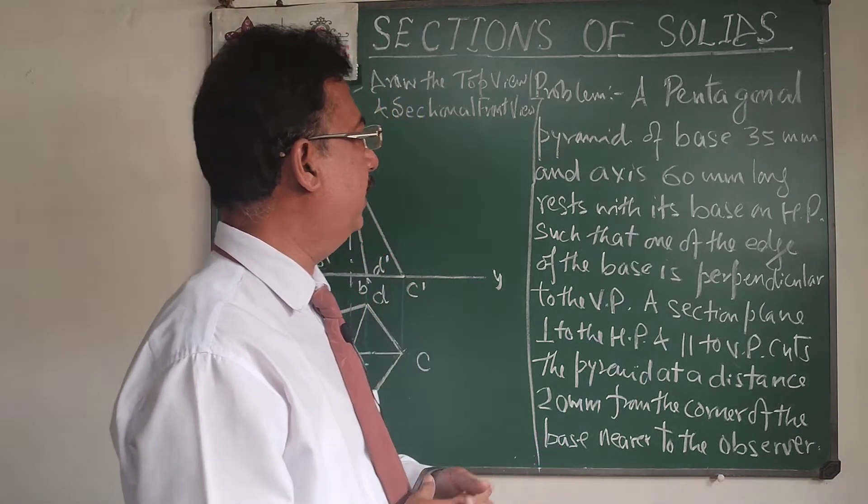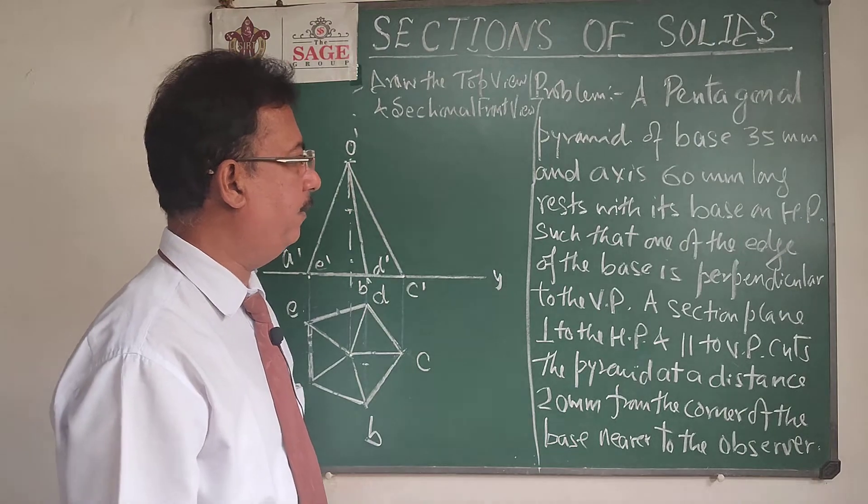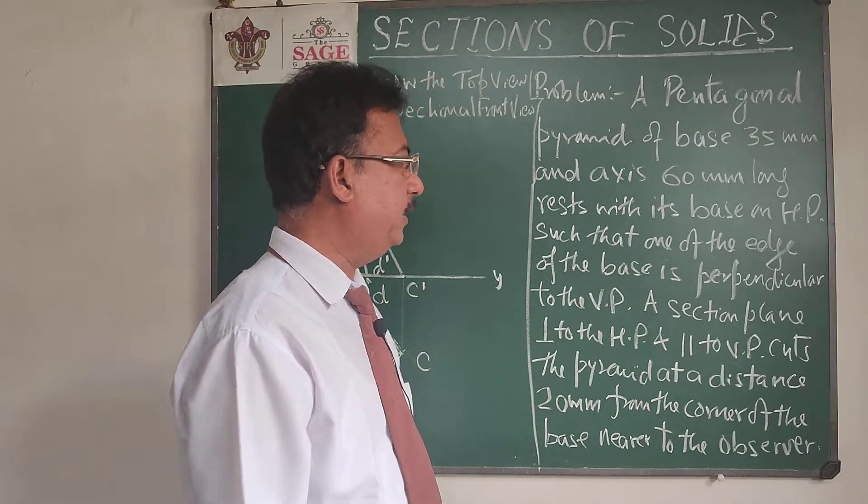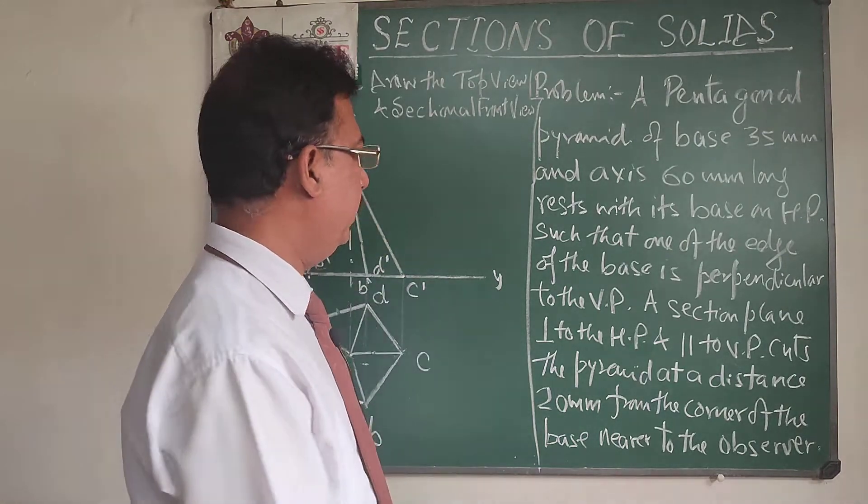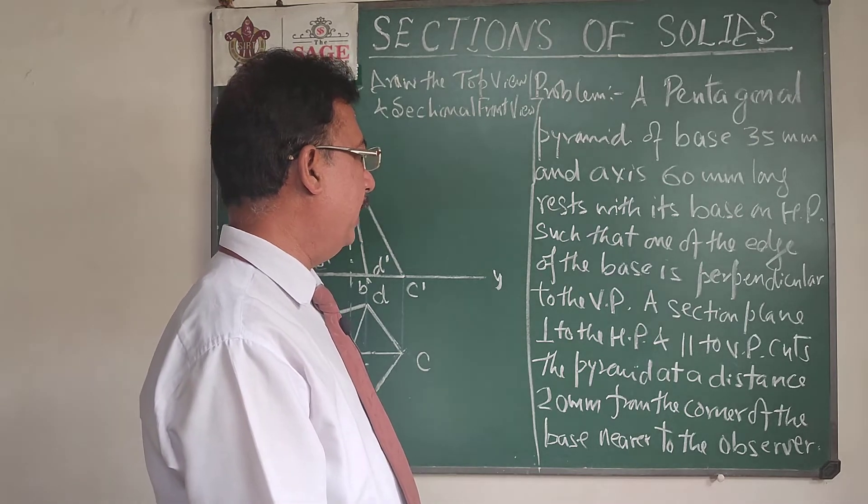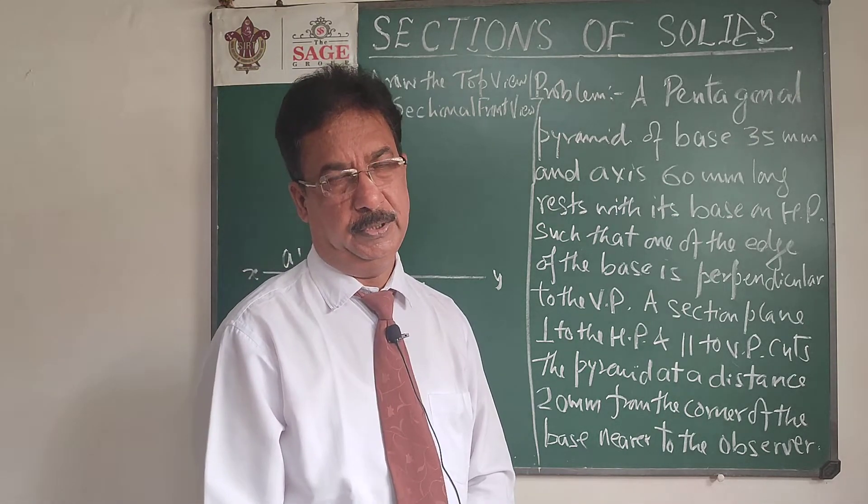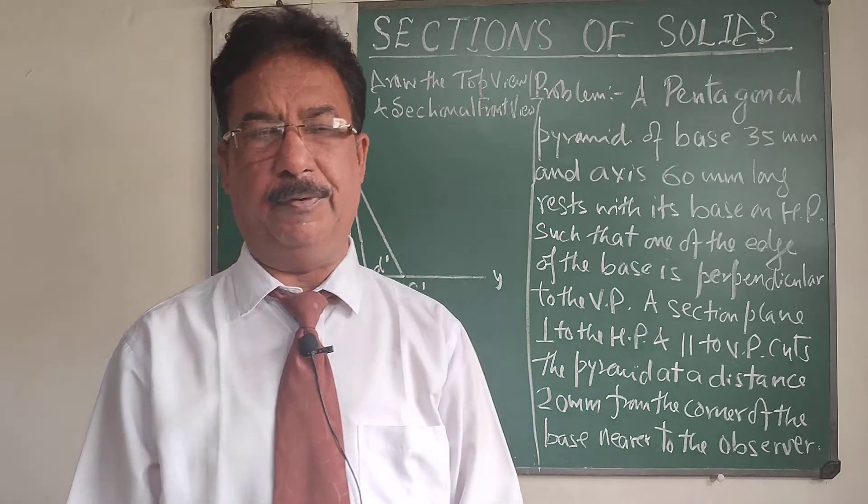A pentagonal pyramid of base 35 mm and axis 60 mm long rests with its base on the HP, such that one of the edge of the base is perpendicular to the VP. So this is the position of the solid will be given to me.